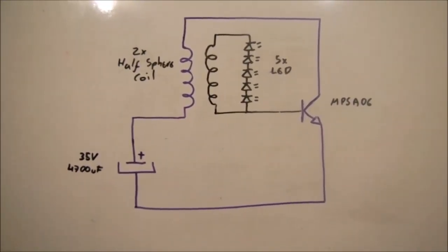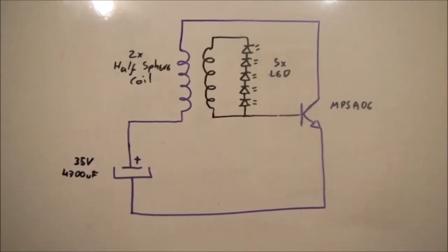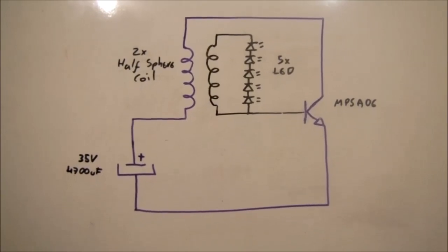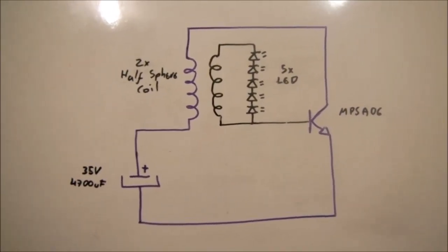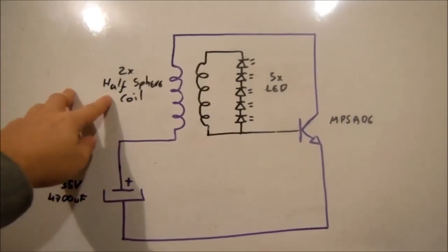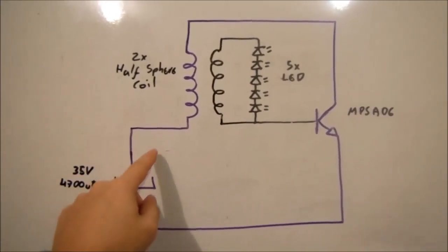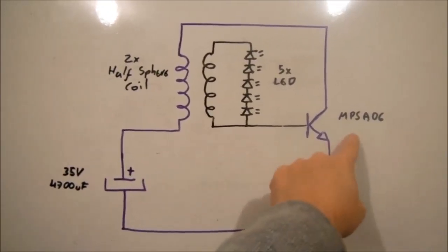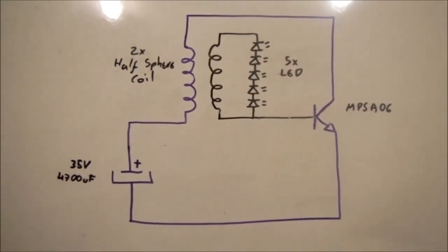After watching LaserSaber doing some experiments using his SCGR blooper circuit, I decided to try the same circuit with some slight modifications. Instead of using his POT transformer, I'm using two half-sphere coils that I have designed, and I'm not using the potentiometer connected to the base. I'm using a different transistor and five LEDs instead of three.